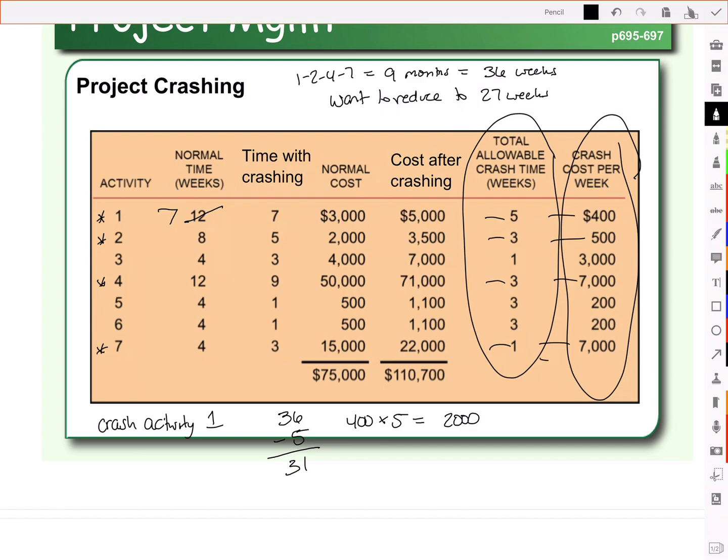So remember our paths that we found before were 1, 2, 4, 7; 1, 2, 5, 6, 7; 1, 3, 5, 6, 7; and 1, 3, 4, 7. Well, 1, 2, 4, 7 took 36 weeks before. And we just shaved 5 weeks off of activity 1. So now, it takes 31 weeks.